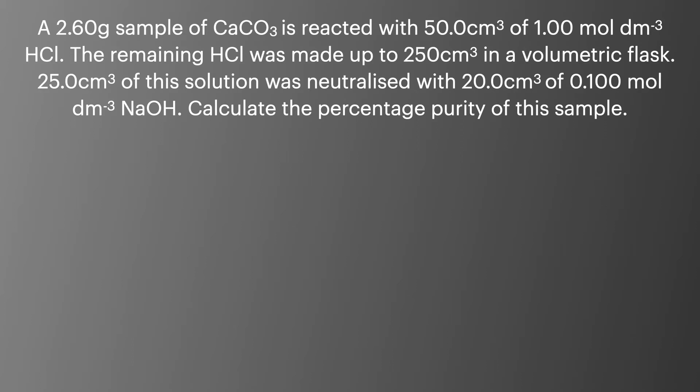Like always we're going to put this process into practice by looking at an example question. A 2.6 gram sample of calcium carbonate is reacted with 50 cm³ of 1.00 mol dm⁻³ HCl. The remaining HCl was made up to 250 cm³ in a volumetric flask. 25 cm³ of this solution was neutralized with 20 cm³ of 0.100 mol dm⁻³ NaOH. Calculate the percentage purity of this sample.